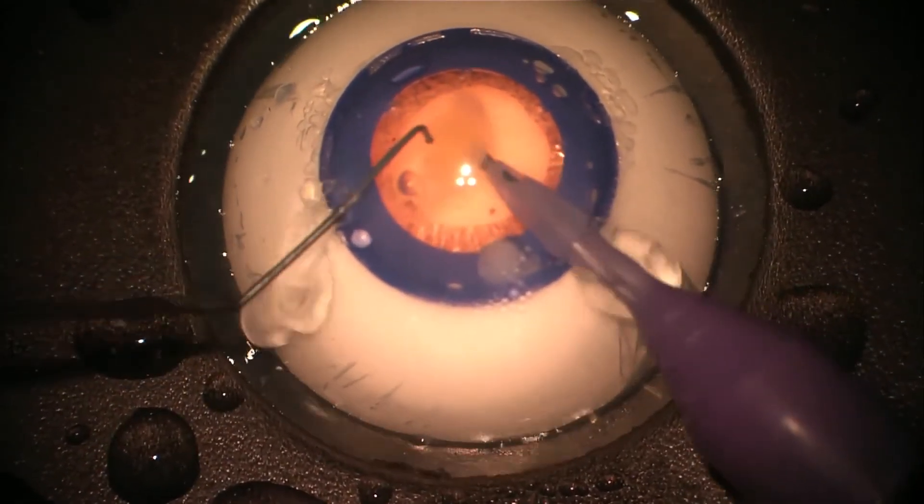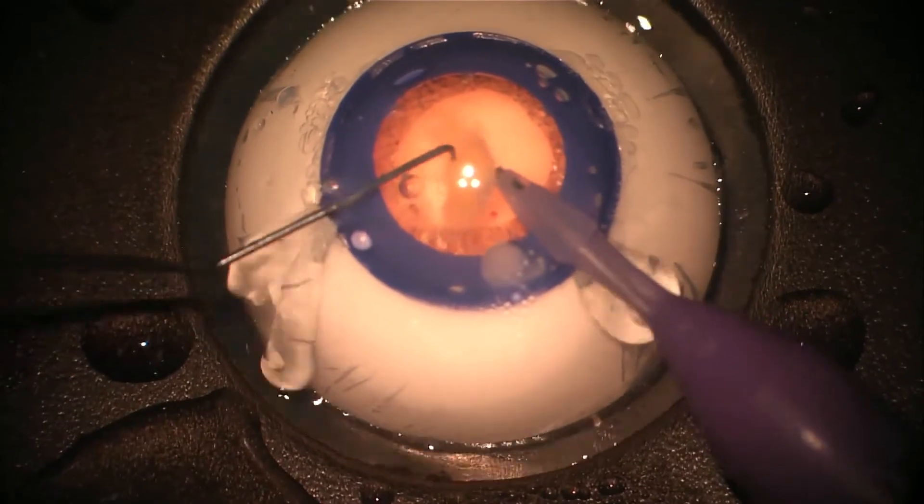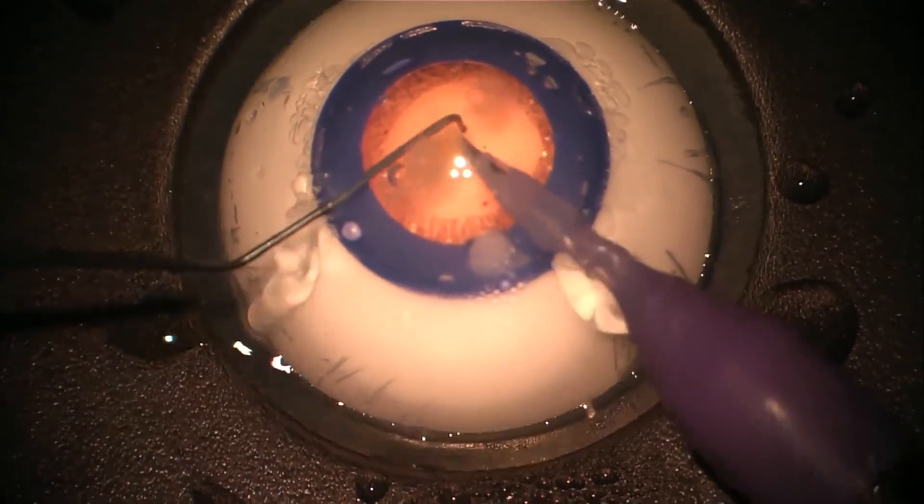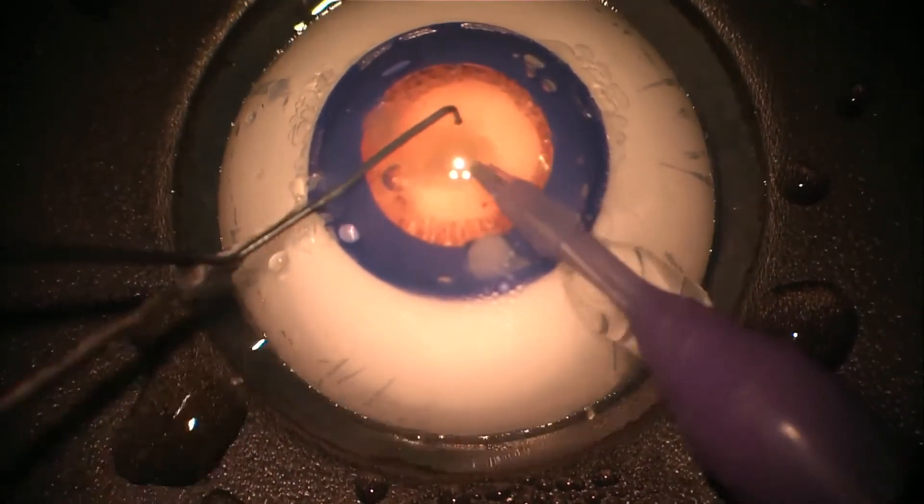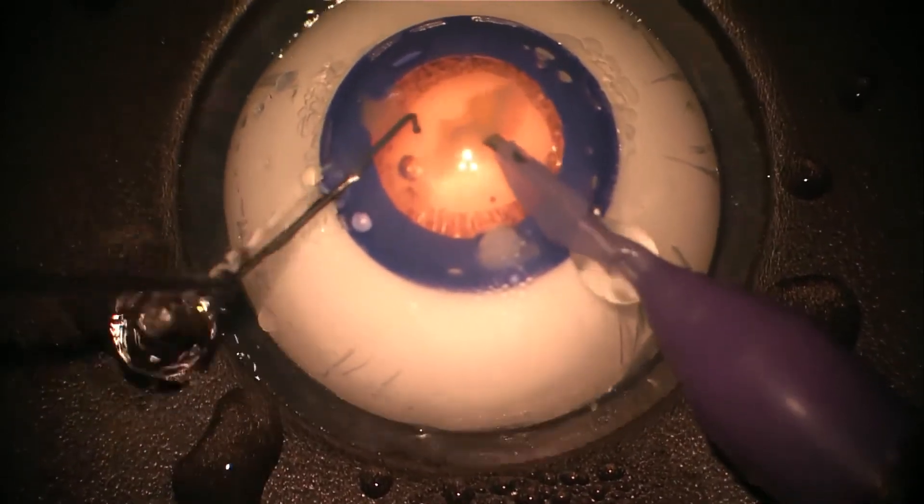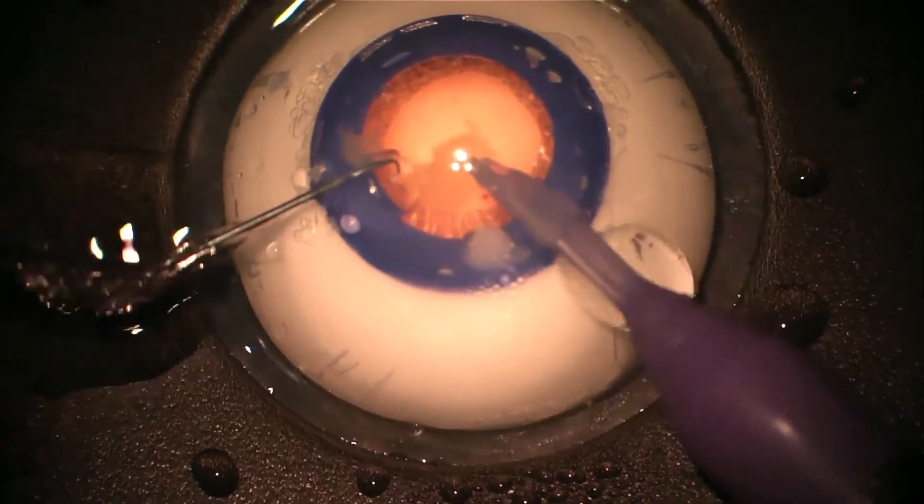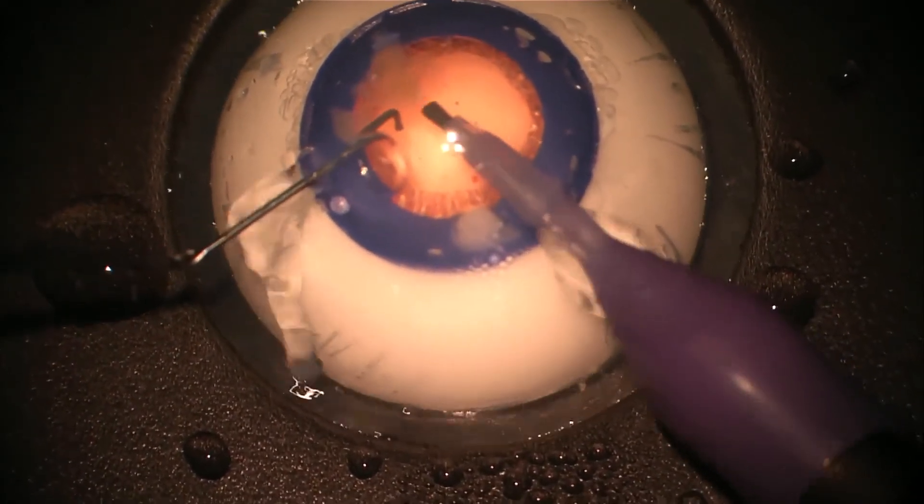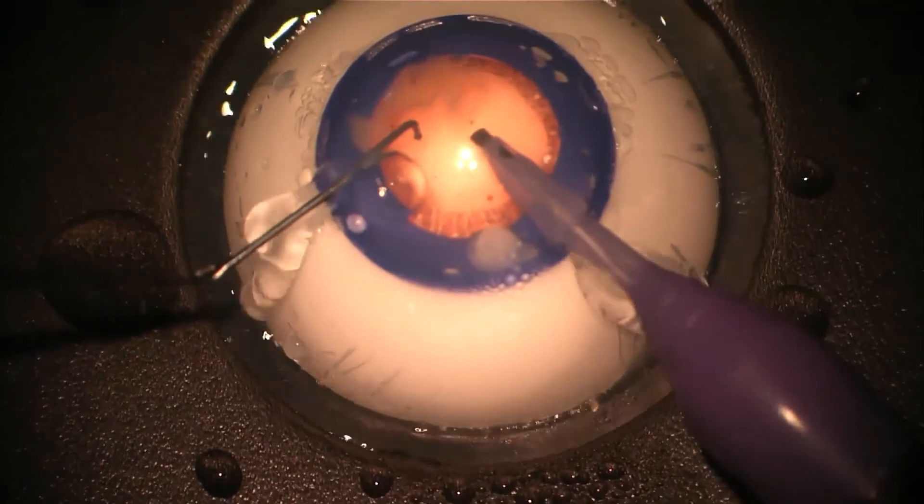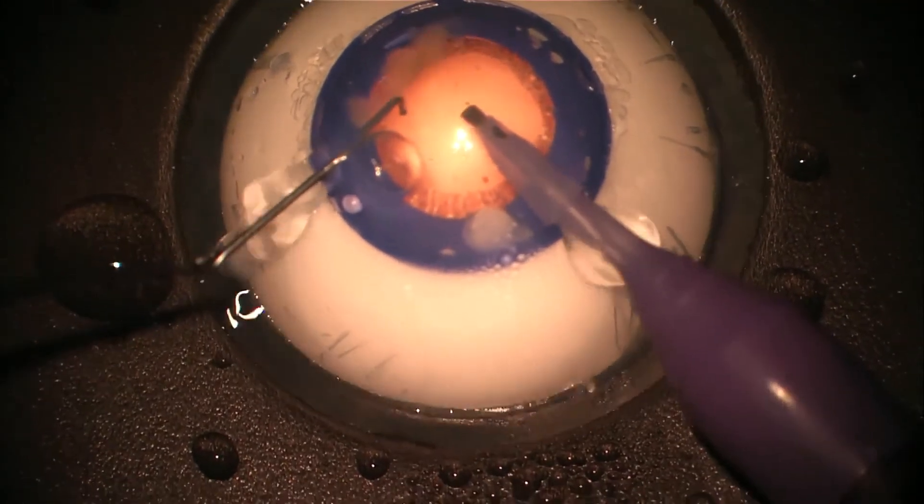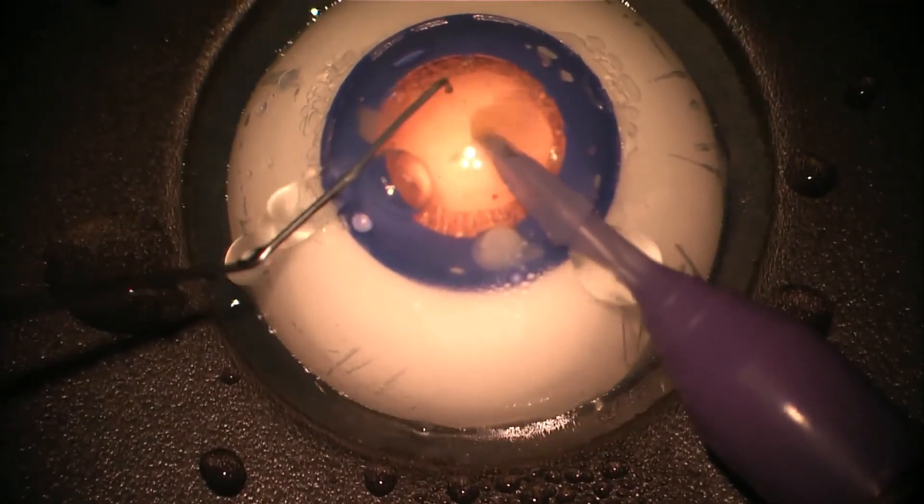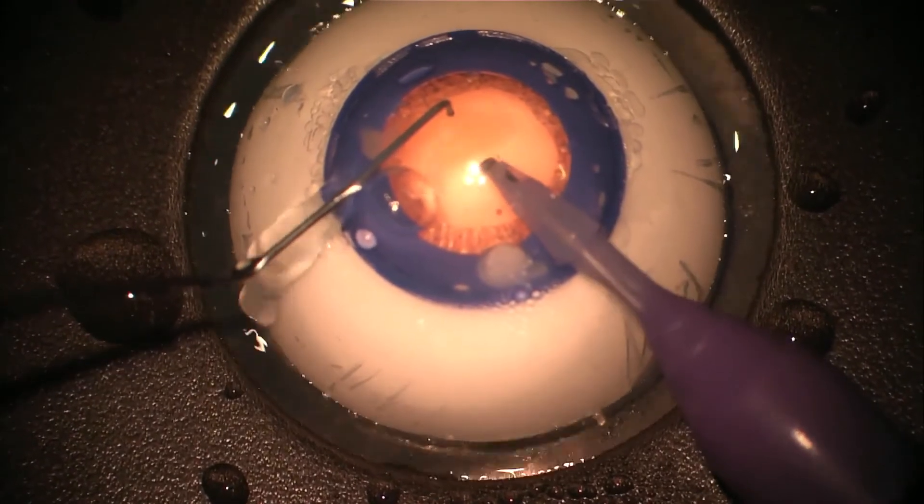We tend to use slightly higher vacuums to remove the segments than you otherwise would normally do. And of course with the basic FACO eyes there's no posterior capsule to be sucked up into the port, so really the only jeopardy is getting too close to the anterior capsule and causing an anterior capsule tear.